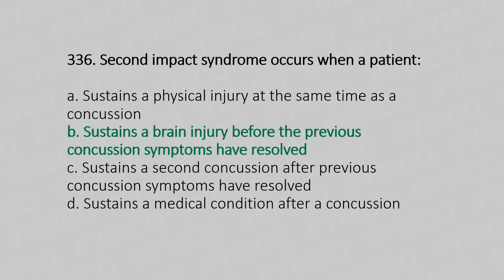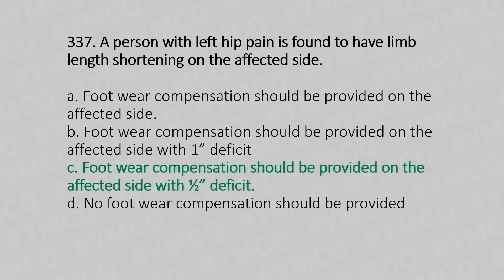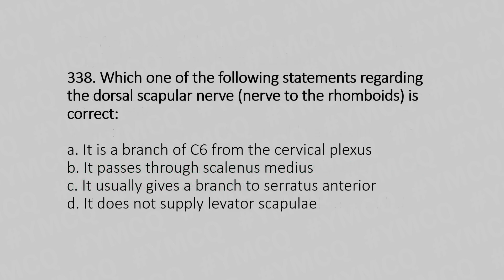Question number 337: A person with left hip pain is found to have limb length shortening on the affected side. Option A: footwear compensation should be provided on the affected side. Option B: footwear compensation on the affected side with a one-inch deficit. Option C: footwear compensation on the affected side with a half-inch deficit. Option D: no footwear compensation. The answer is option C, half-inch deficit on the affected side.